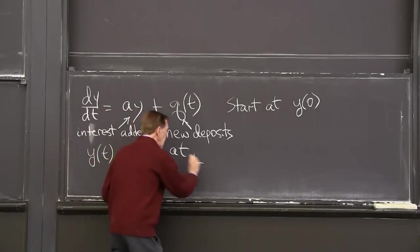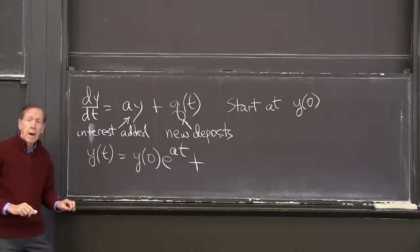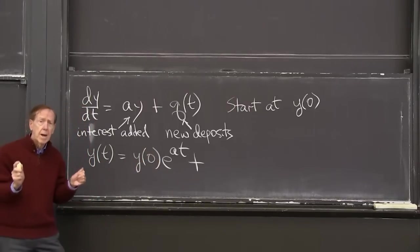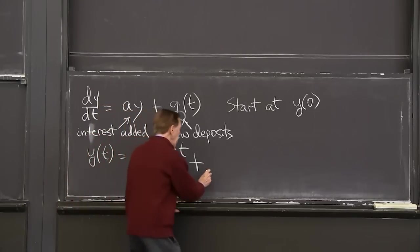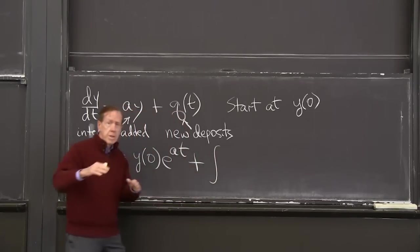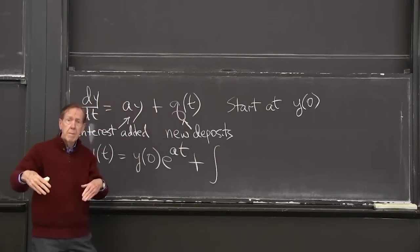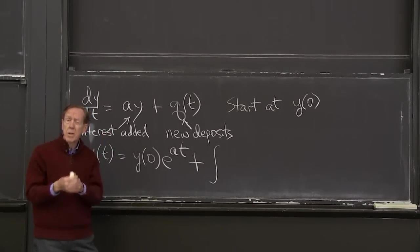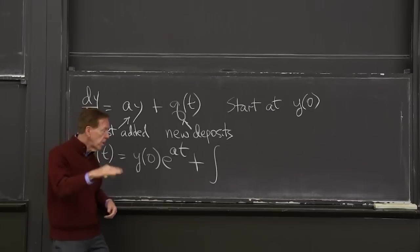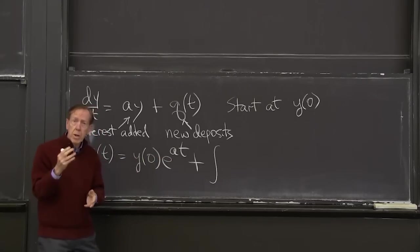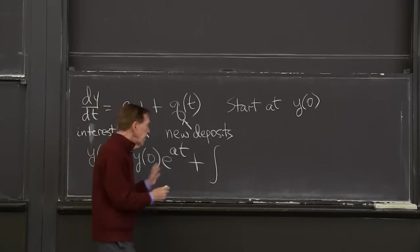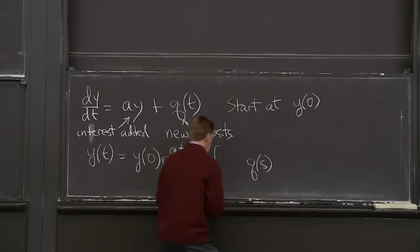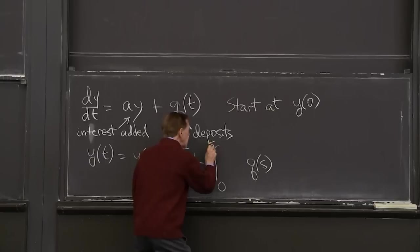But now I want to add in a particular solution. And it'll be the particular solution that matches the deposits. And I want to understand this formula. So here's the formula. I'm going to the deposits. Each deposit goes in at time t, goes in at some time. And then it grows. Once you've made the deposit, it's going to grow exponentially. With, oh, it will grow over the remaining time. So here's the formula.